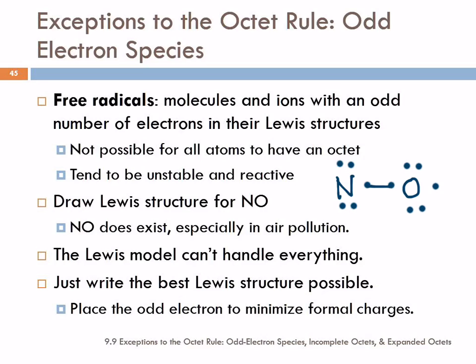Nobody has an octet, so let's move a lone pair. That's better. Now this nitrogen has an octet and the oxygen has seven. We could draw another one where the oxygen has the octet and the nitrogen has seven.